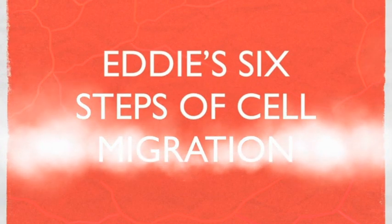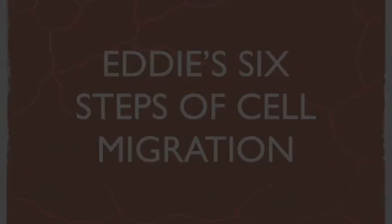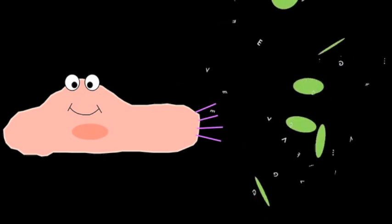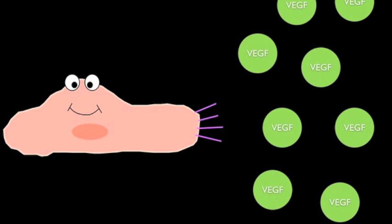The process of endothelial cell migration can be separated into six distinct steps. First is the sensing of a VEGF gradient by the filopodia, which are membranous projections containing bundles of actin filaments.